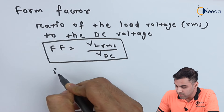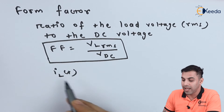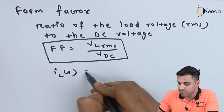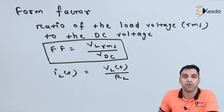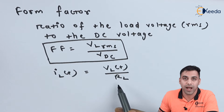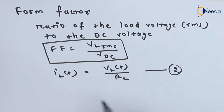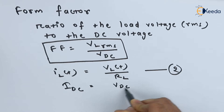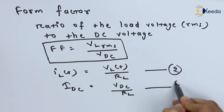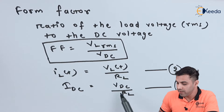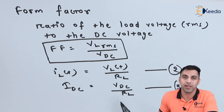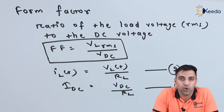The load current: let I_L(t) be the load current. It is mathematically defined as I_L(t) = V_L(t) / R_L — let this be equation number two. The value of the DC current flowing through the circuit after rectification is given by I_DC = V_DC / R_L, assuming the load is a resistive load with resistance R_L.